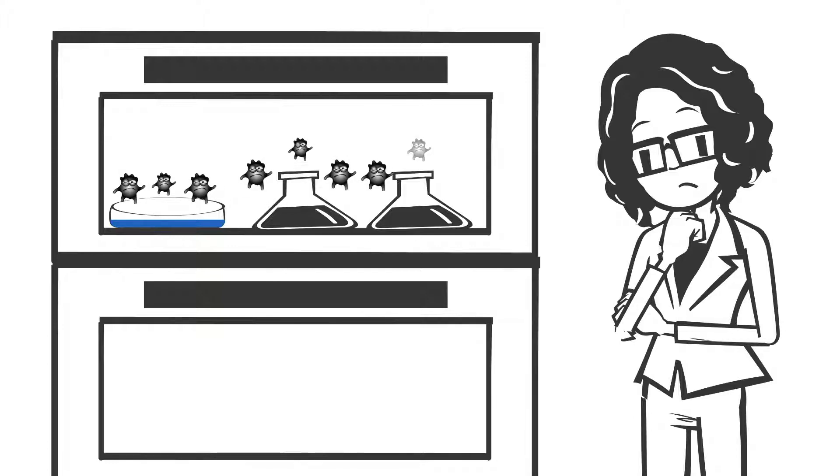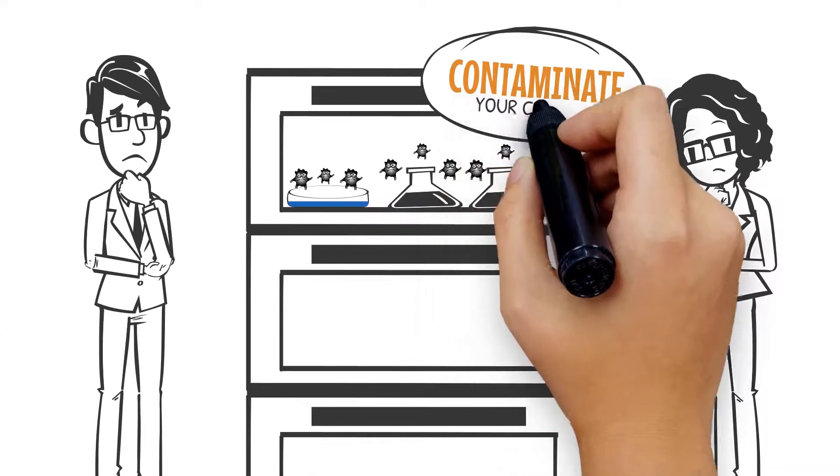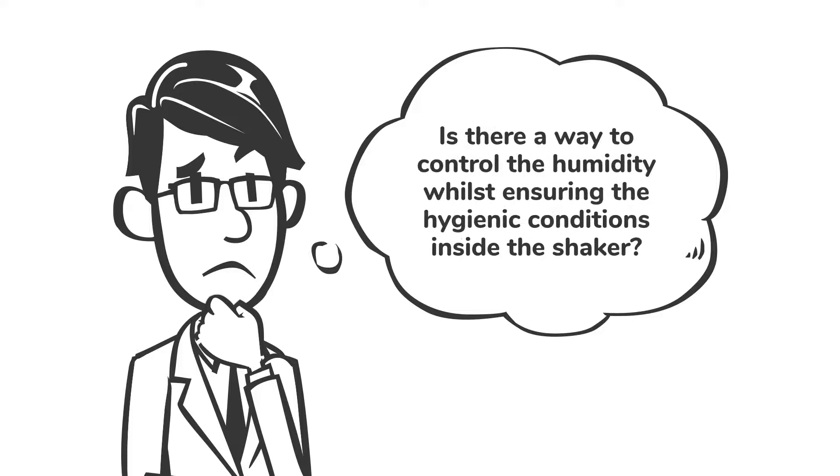Both the condensed water and the water in the container can be a breeding ground for mold, which could contaminate your culture. Is there a way to control the humidity whilst ensuring hygienic conditions inside the shaker?